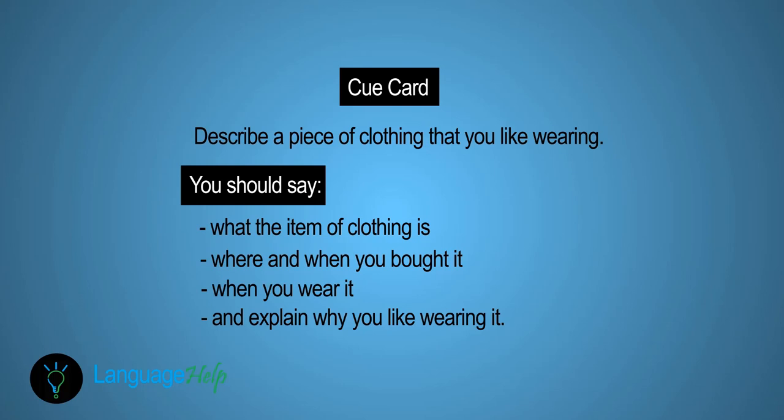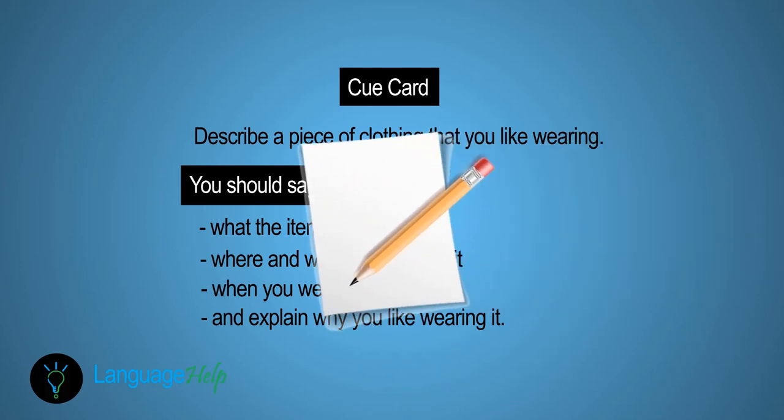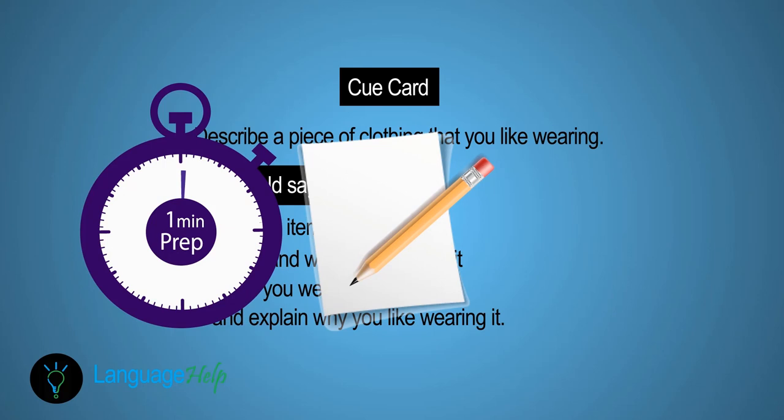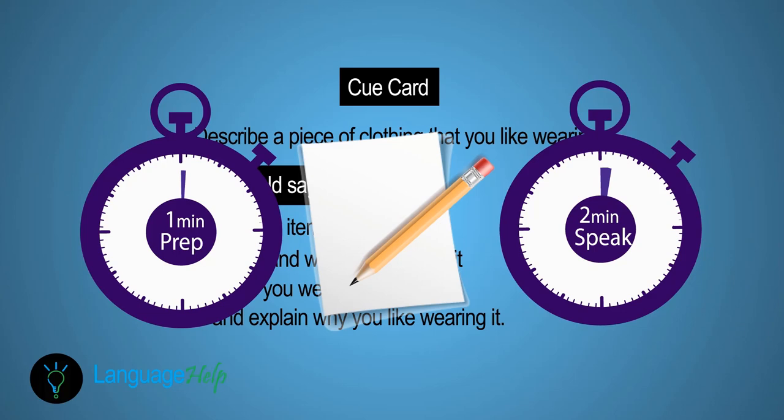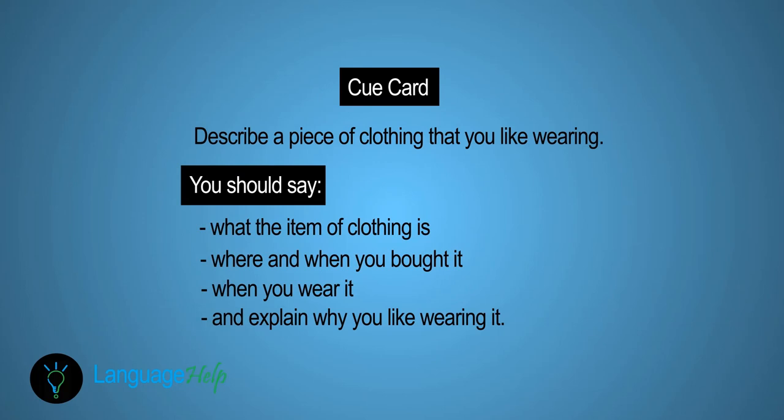In case this is your first time, let me tell you about IELTS cue cards. When you do the second part of the IELTS speaking test, you'll be given a piece of paper with a question written on it — this is what's called a cue card. You'll be given an empty paper, a pencil, and only one minute to structure and organize your answer. After the minute is over, you're supposed to speak on the topic for about two minutes, then answer one or two follow-up questions. Not all questions will be familiar to you, and you're not expected to tell the truth, so you can lie as much as you want, if you want to.